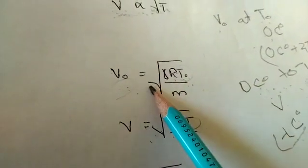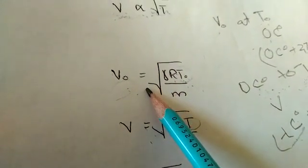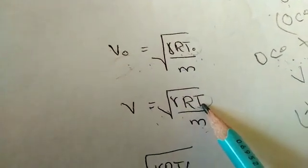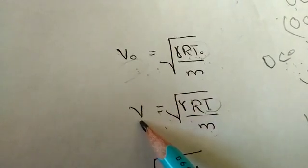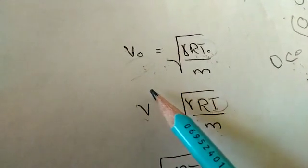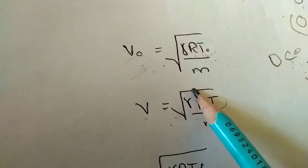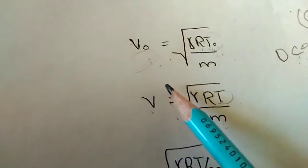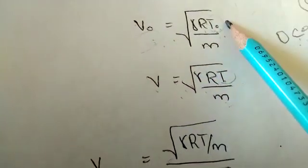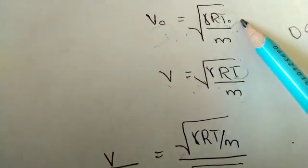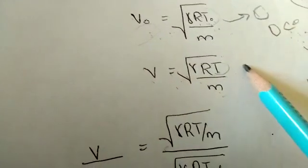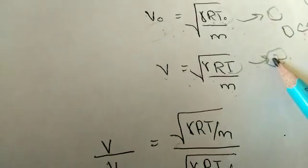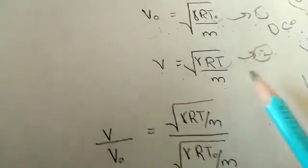We have two different values of speed of sound at two different temperatures. At temperature T0, the speed of sound is V0, and at temperature T, the speed of sound is V. To find the exact relation of how much change in temperature changes the speed of sound, we divide these two equations — equation 1 and equation 2.